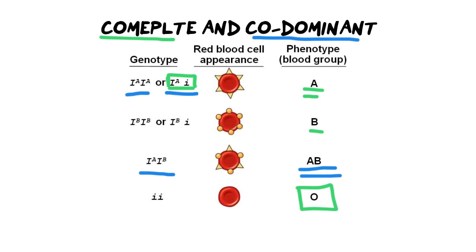Complete dominance states that when two contrasting traits appear as a heterozygous mix, the dominant allele will mask the recessive allele. So this person will have blood group A. Likewise, if there is just one capital I with a superscript B, that person will automatically be blood group B — the lowercase i is masked as a recessive allele. That means the only way you can be blood group O, following this law of dominance, is to have two lowercase i's — two recessive alleles — in order to express that characteristic.